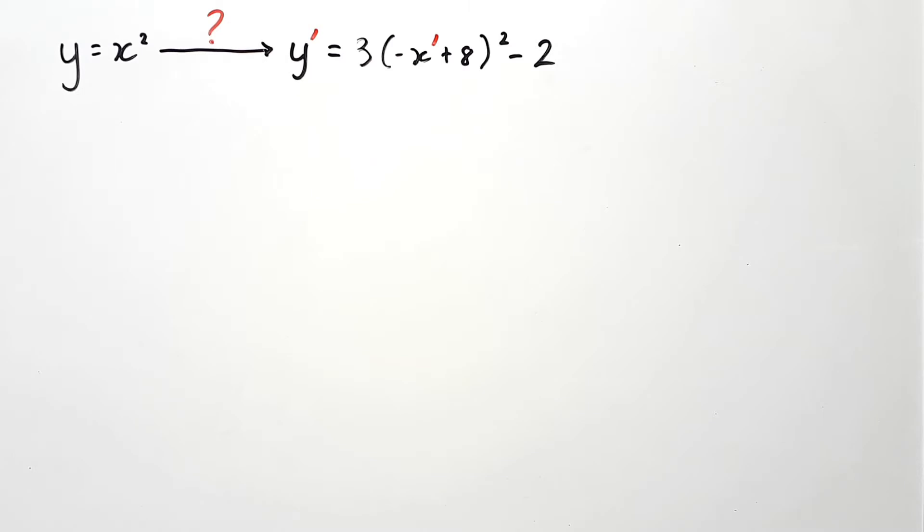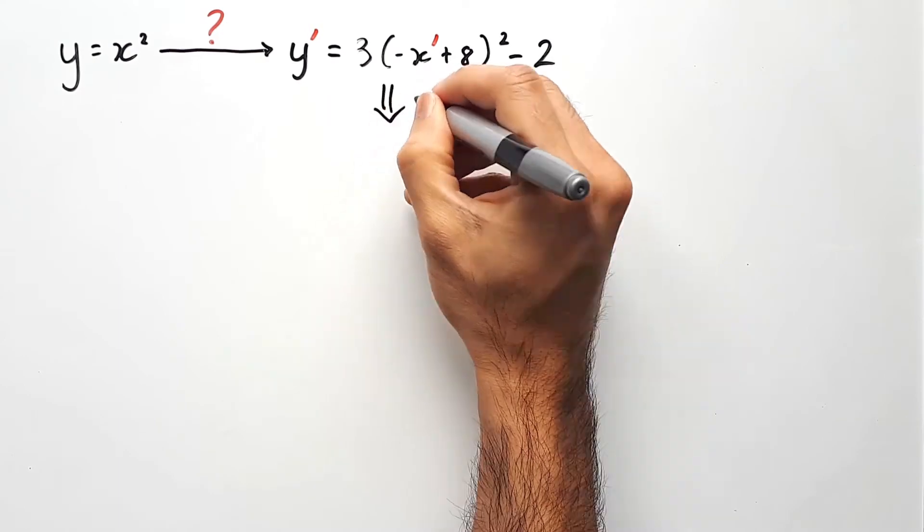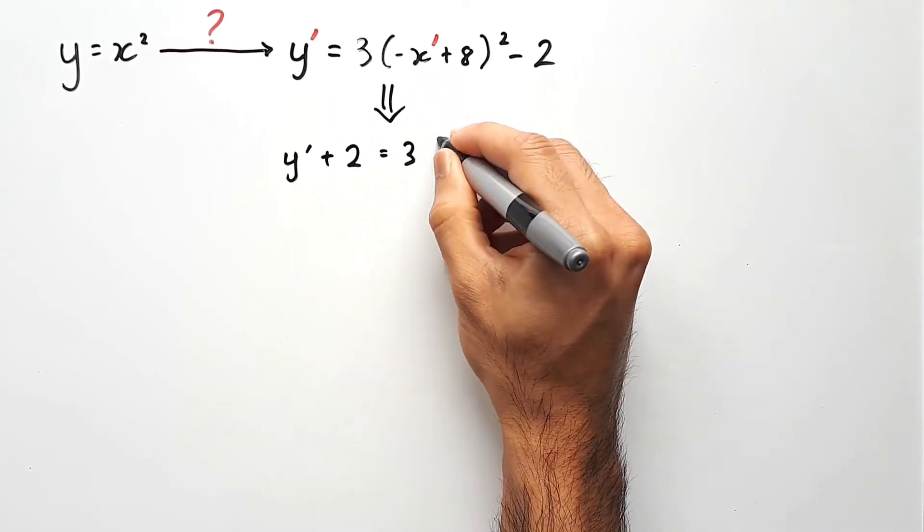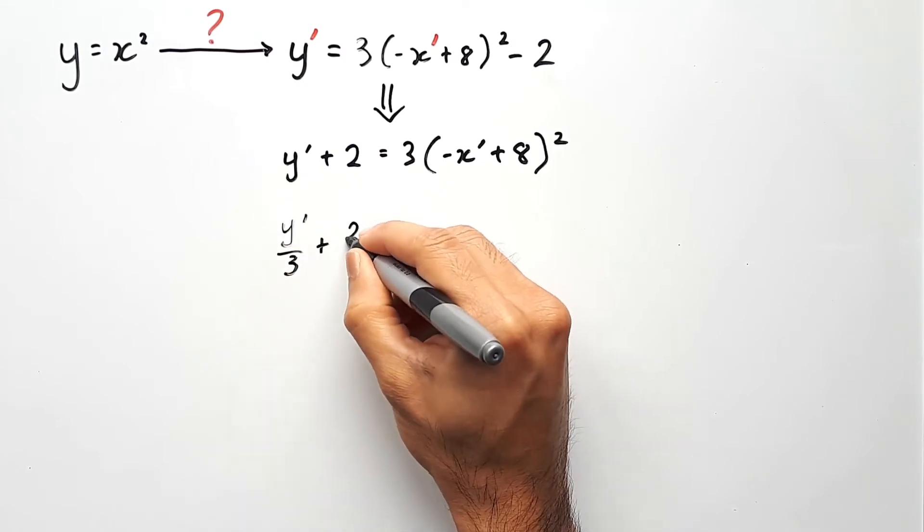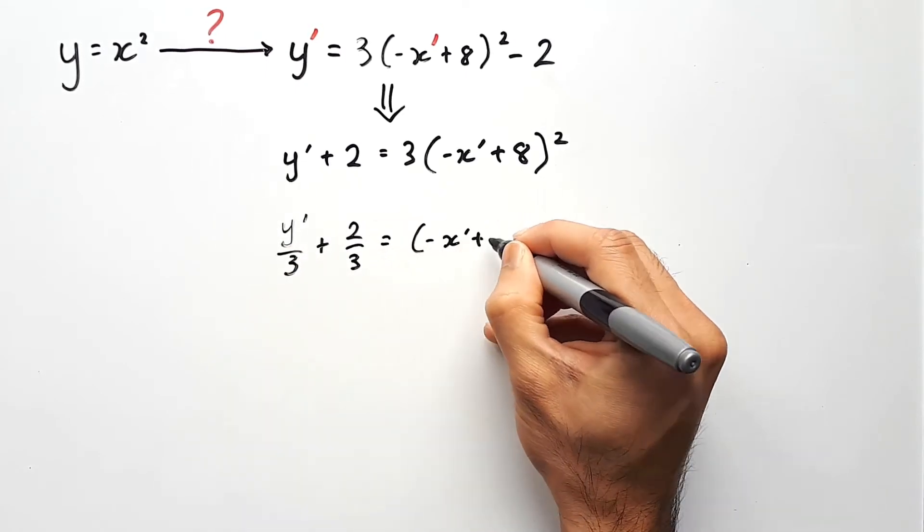From here, we want to move everything over to the left side of the image equation that has to do with the y variable. Or in other words, you want to isolate everything related to the x inside the brackets on the right-hand side.